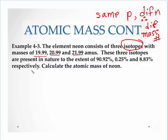So it gives us three isotopes of neon, 19.99, 20.99, and 21.99.